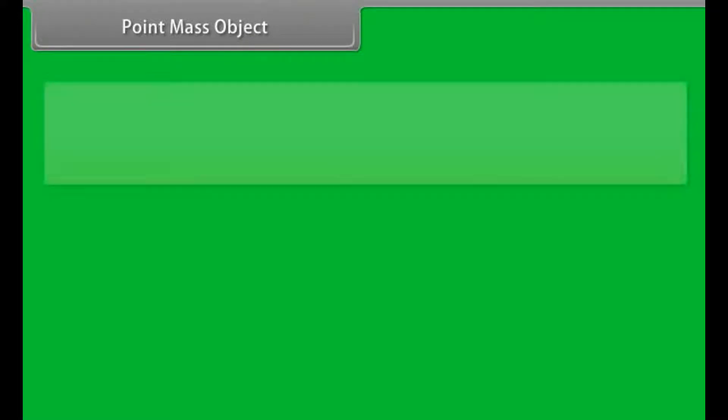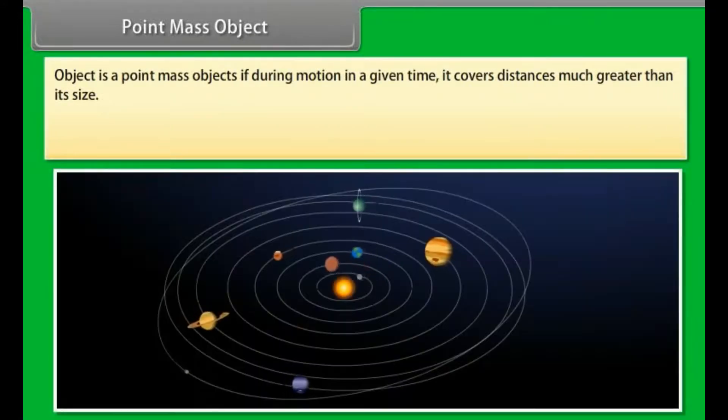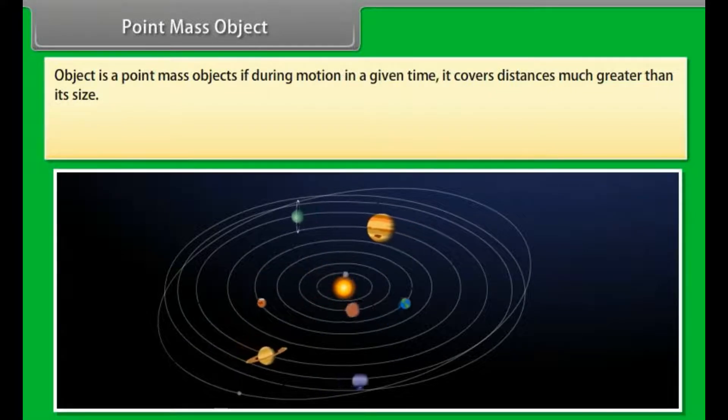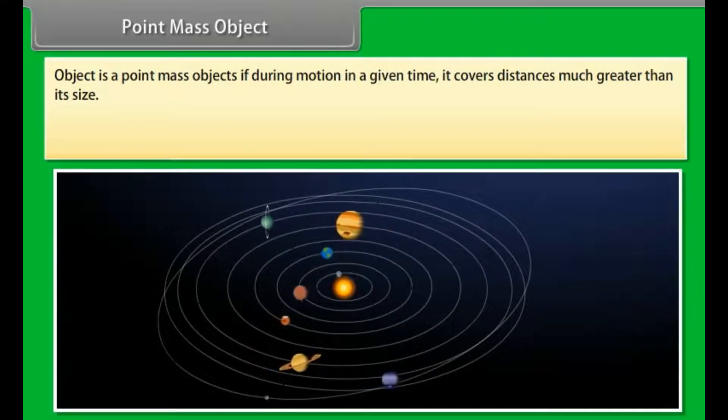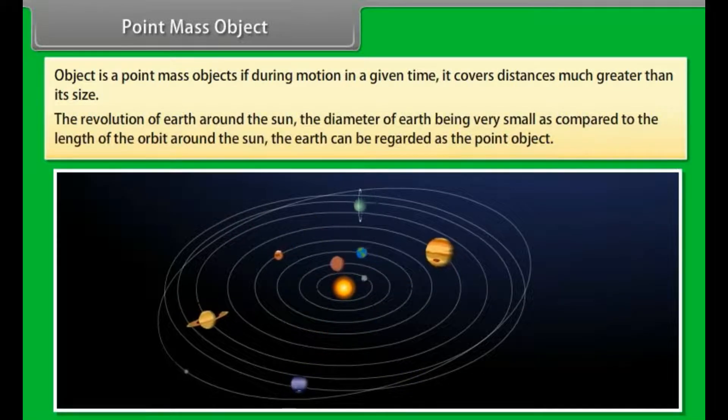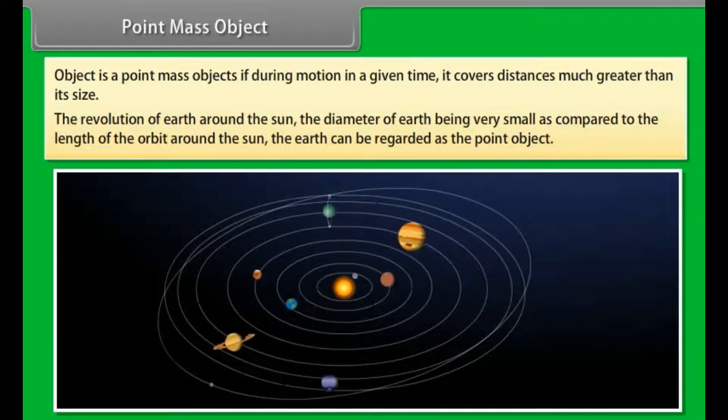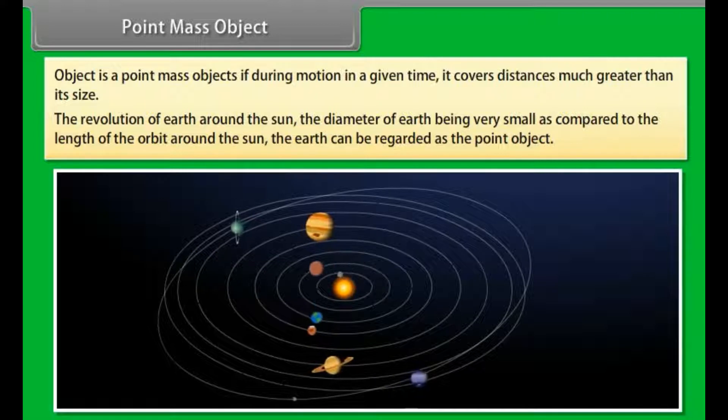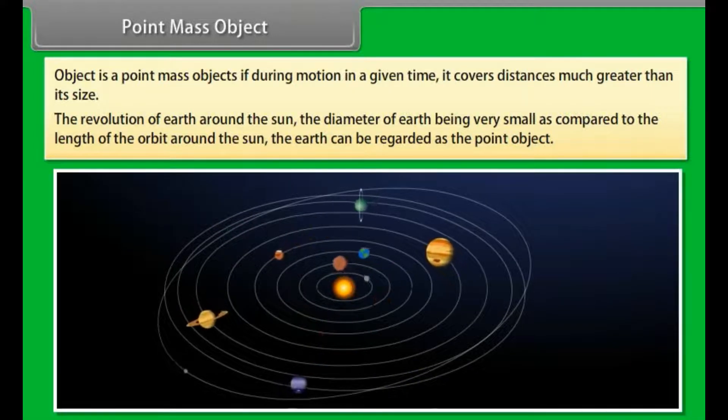Point mass object. Object is a point mass object if during motion in a given time it covers distances much greater than its size. Example: The revolution of earth around the sun. The diameter of earth being very small as compared to the length of the orbit around the sun. The earth can be regarded as the point object.